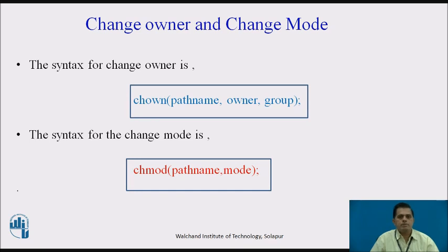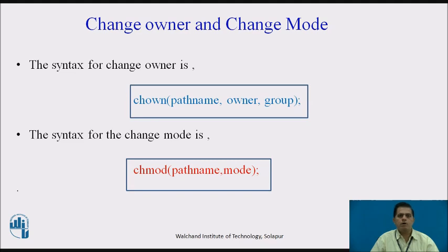Change owner: in the Unix file system, every file has an owner, a group, and others. The owner creates a file and has permission to change the mode. The group also has permission to change the mode, and others can also make changes. The syntax for change owner is: chown pathname owner group, where pathname is absolute or relative, owner is the owner of the file, and group is the group which contains a group of people. The syntax for change mode is: chmod pathname mode, where mode describes symbolic mode or numeric mode.